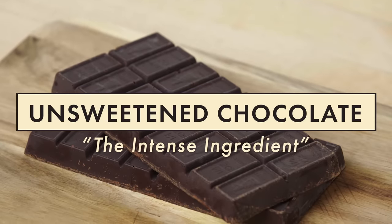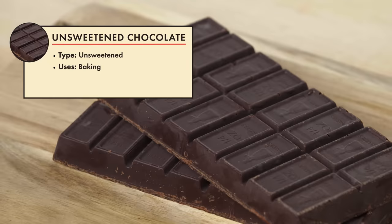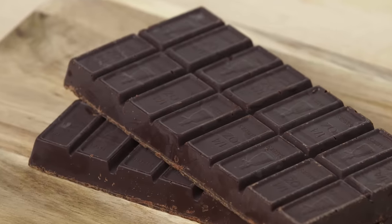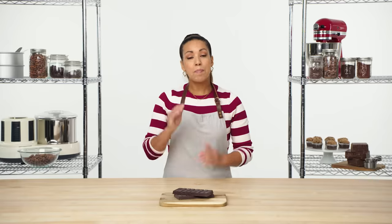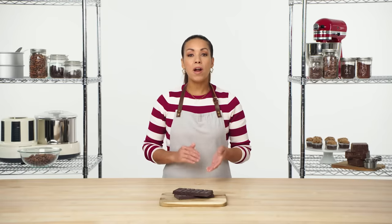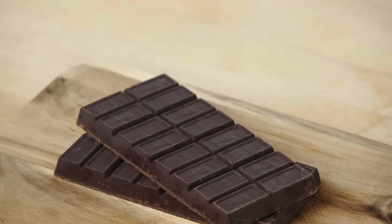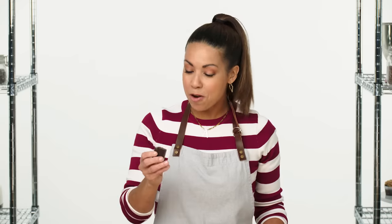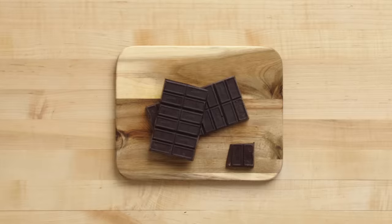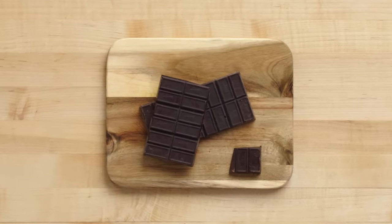Unsweetened chocolate is also commonly referred to as baking chocolate. It has no sugar added and is frequently used in baking. Unsweetened chocolate is the ground cocoa mass or paste that is then melted into chocolate liquor and set into bars. It is about equal parts cocoa butter and cocoa solids. It can be very bitter — it has absolutely no sugar added, and that's why it's used more commonly for baking instead of snacking. This is a very pure form of chocolate, so this is what you want to use when you're making a devil's food cake or a chocolate stout cake.